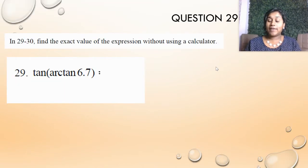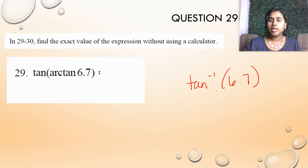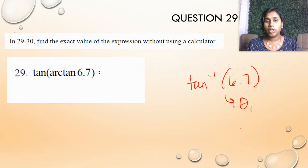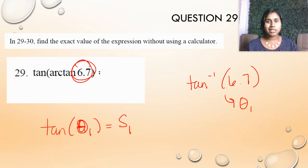So finding this expression – first, we solve the inside, and the inverse tan of 6.7 would be equivalent to some angle value. Let's just call that angle 1. If I solve tan of angle 1, that's going to be equal to 6.7. Well, we already know side 1, so guess what the answer is here.